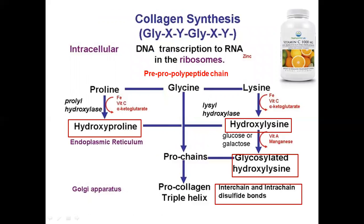The triple helix is stabilized by hydrogen bonds between the NH group of glycine and the keto group of peptide bonds. Collagen is an example of a protein whose synthesis involves many post-translational modifications, both intracellular and extracellular. After transcription, mRNA moves into the cytoplasm and interacts with ribosomes for translation. After translation, the pre-pro-polypeptide chain travels to the endoplasmic reticulum where it undergoes post-translational processing.